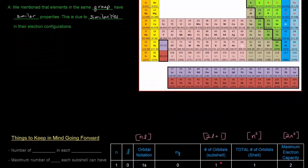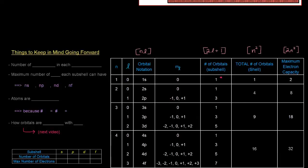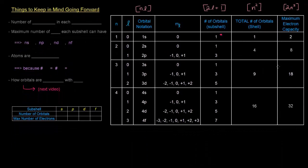So, moving forward with electron configurations, there are some things to keep in mind. The first thing is the number of orbitals in each subshell. So, if you recall from the quantum mechanical model videos, we talked about how if you have an L value of 0, you have an S subshell. If you have 1, that corresponds to P. An L value of 2 corresponds to D. An L value of 3 corresponds to F.